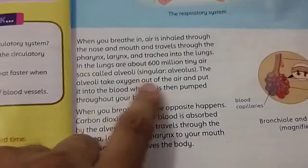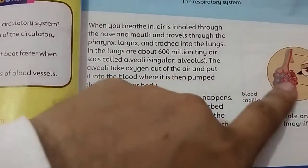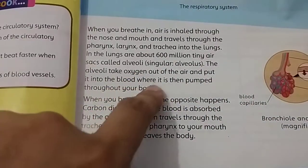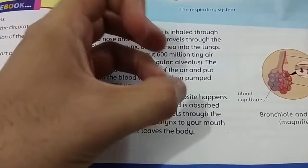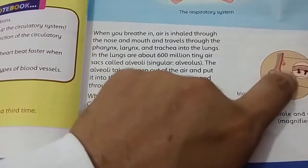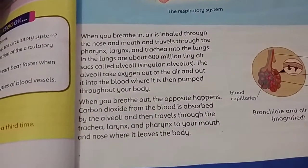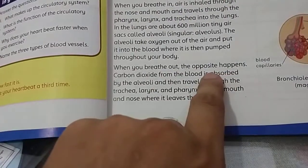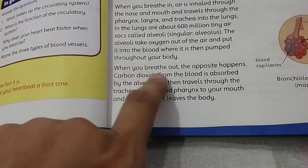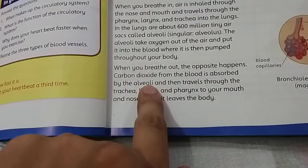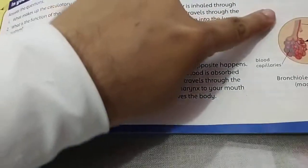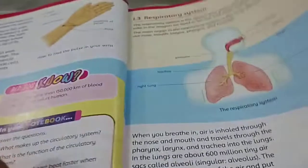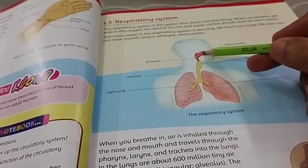The alveoli take oxygen out of the air and put it into the blood, where it is then pumped throughout the body. The opposite also happens: carbon dioxide from the blood is absorbed by the alveoli and then travels back through the trachea, larynx, and pharynx, leaving the body through the lungs, mouth, and nose.